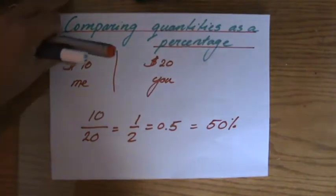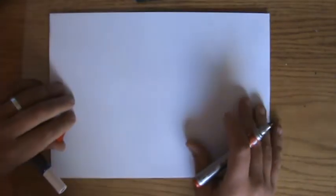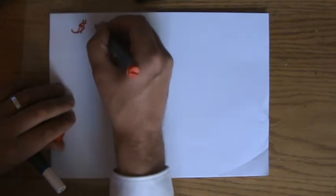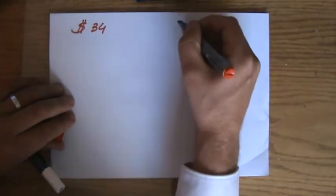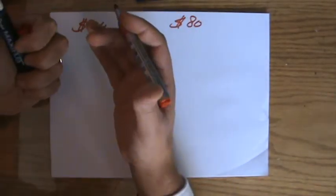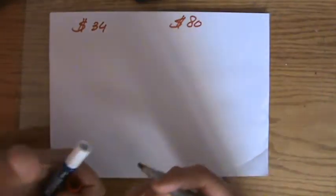So what does that look like in general? If I am comparing, with pocket money, I am getting $34, and somebody else is getting, for instance, $80, what amount of pocket money do I get compared to that person as a percentage?